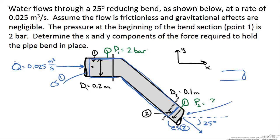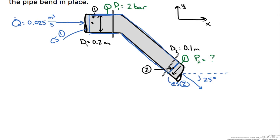Some form of energy balance might help us determine pressure at point 2, because we know we might need that since it is a force acting on our control volume. Indeed this is one of those special problems that requires both an energy and a momentum balance together. So the first thing to do is write down all of our known variables and do the conversions up front.